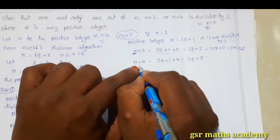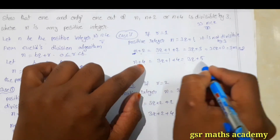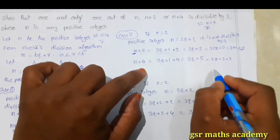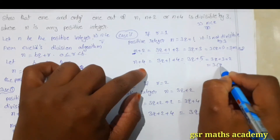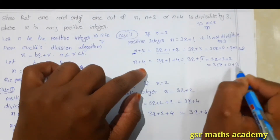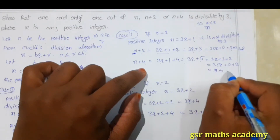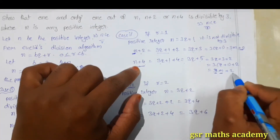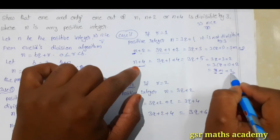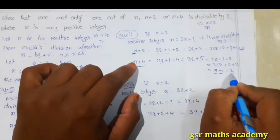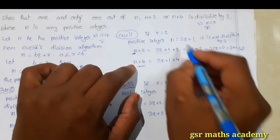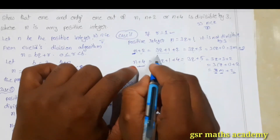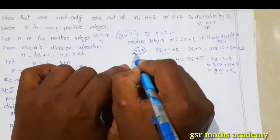And if you take n plus 4, since n is 3q plus 1, then n plus 4 equals 3q plus 1 plus 4, which is 3q plus 5. This I can write as 3q plus 3 plus 2, taking 3 as common gives 3(q plus 1) plus 2, which equals 3m plus 2. That means on dividing n plus 4 by 3, remainder is 2, so n plus 4 is not divisible by 3. Therefore, if r is equal to 1, out of n, n plus 2, and n plus 4, only one number divisible by 3 is n plus 2.